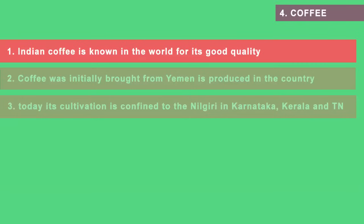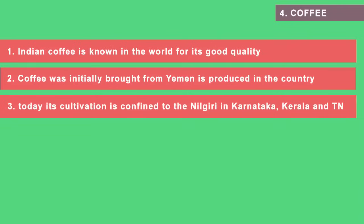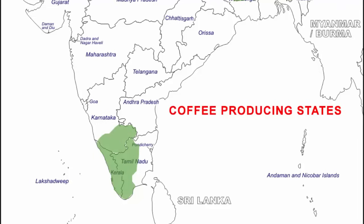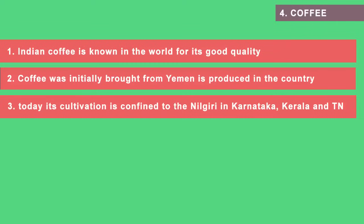After tea, it has to be coffee. Indian coffee is known in the world for its good quality. Coffee was never an Indian crop — it was brought initially from Yemen. Coffee is grown only in the southern region of India and is confined to the area of Nilgiris in Karnataka, Kerala and Tamil Nadu. You will only find coffee plants here and no other place in India.